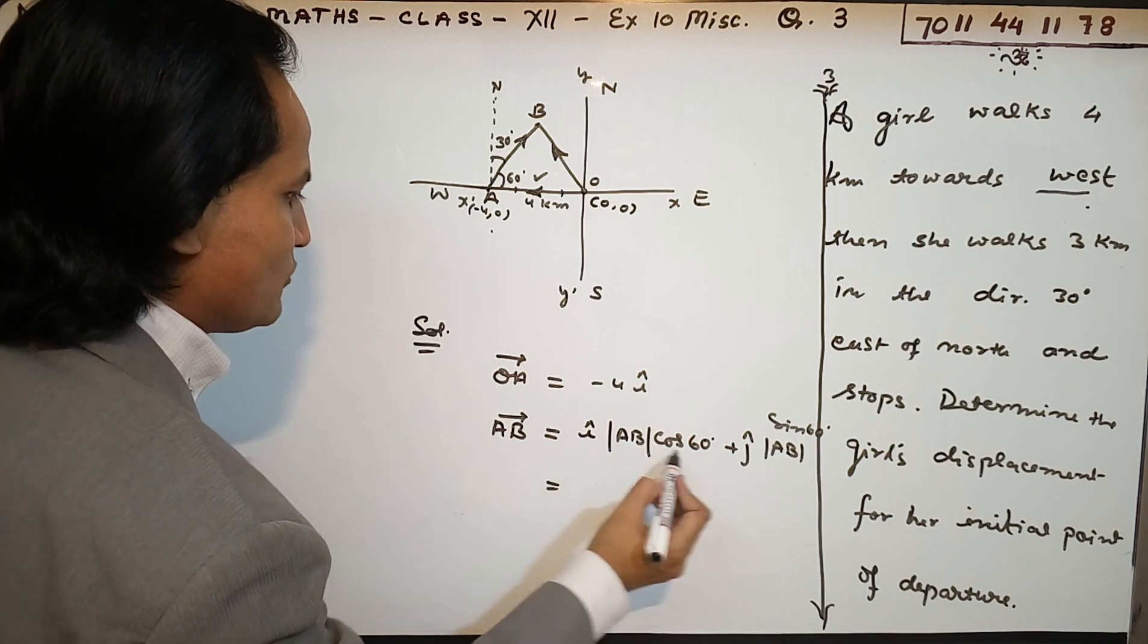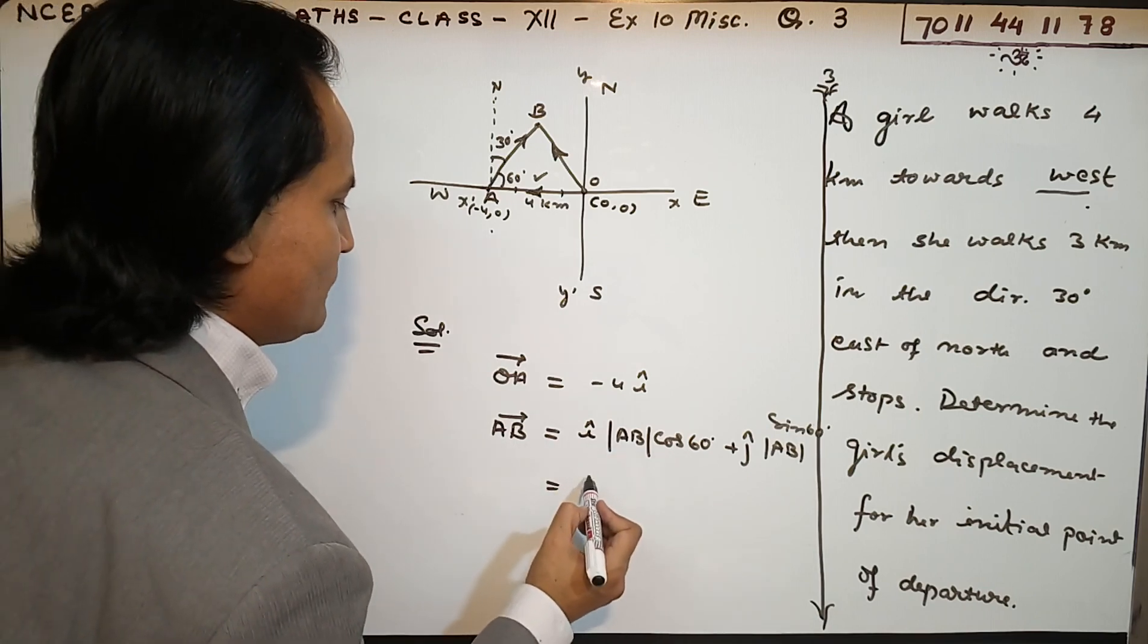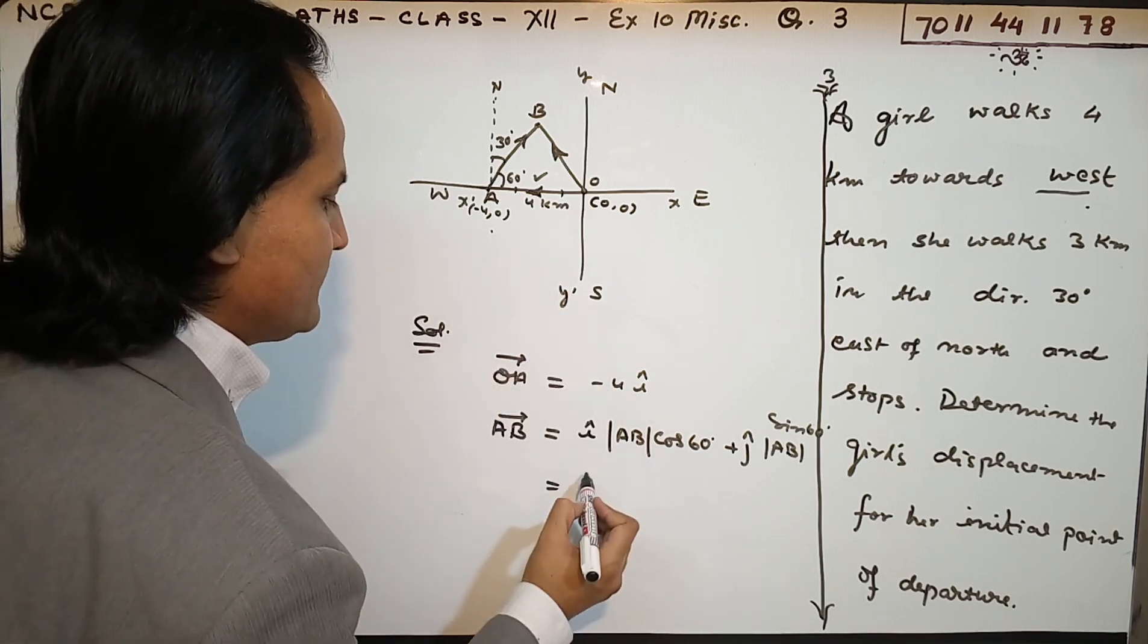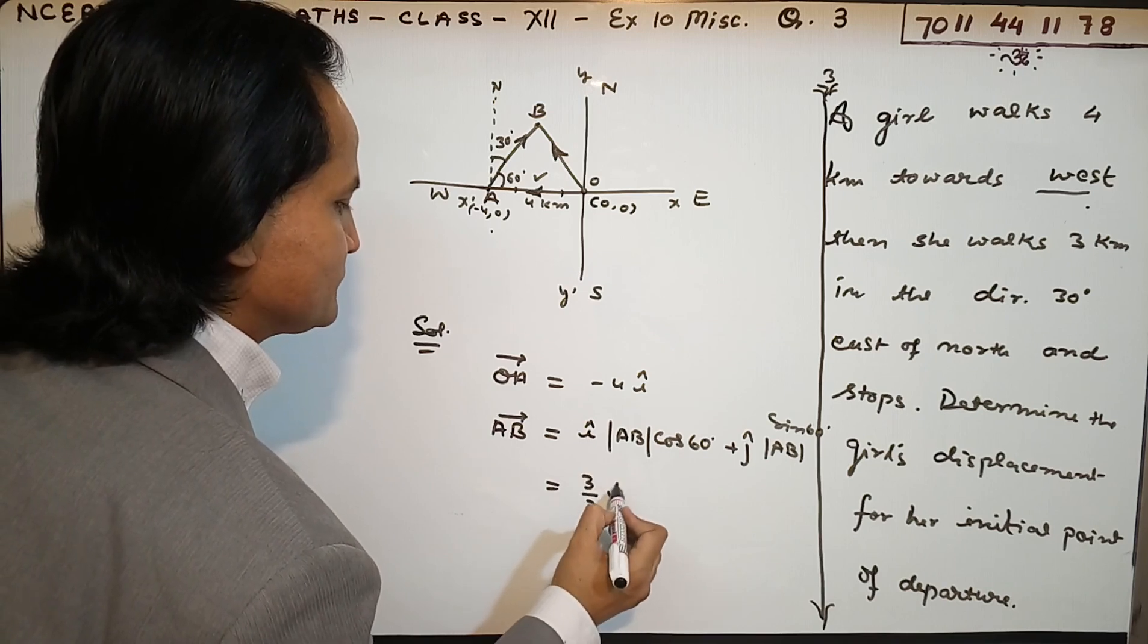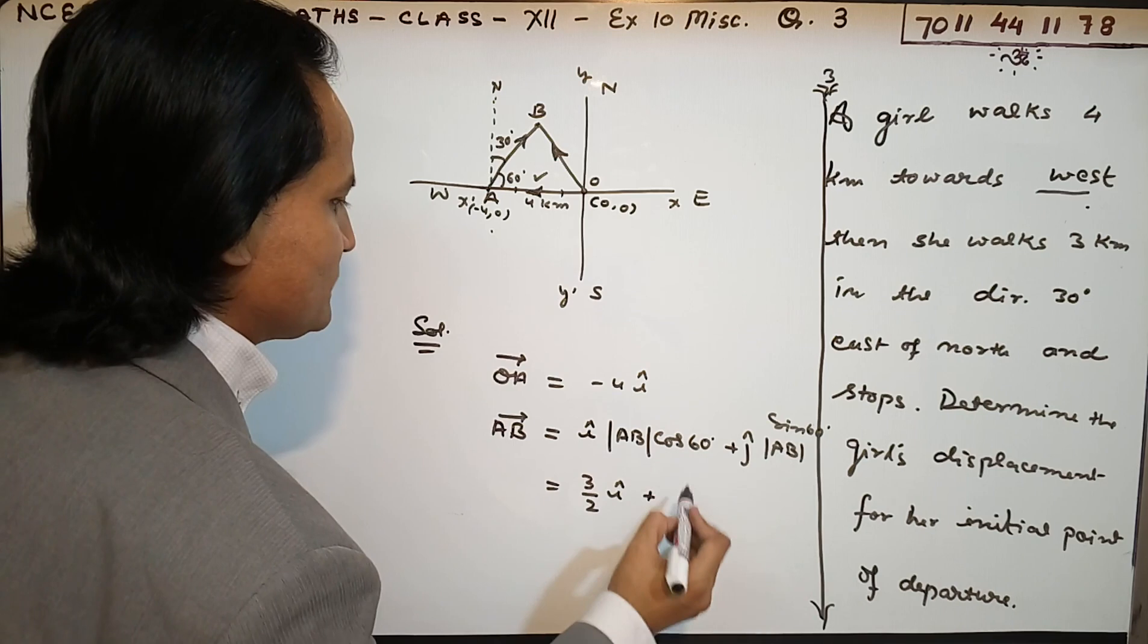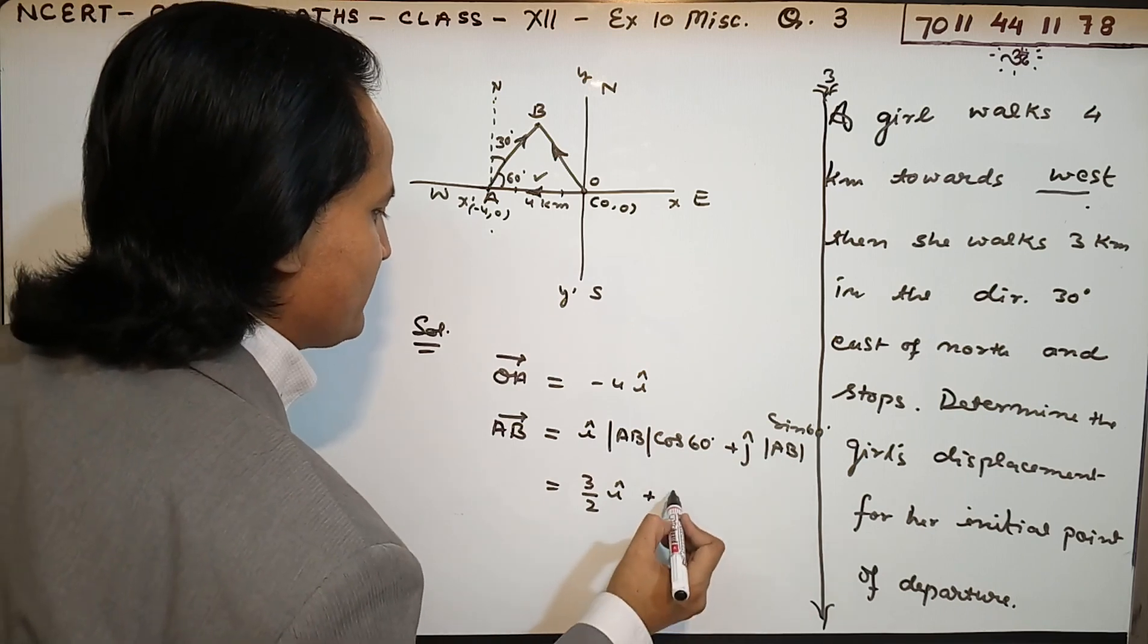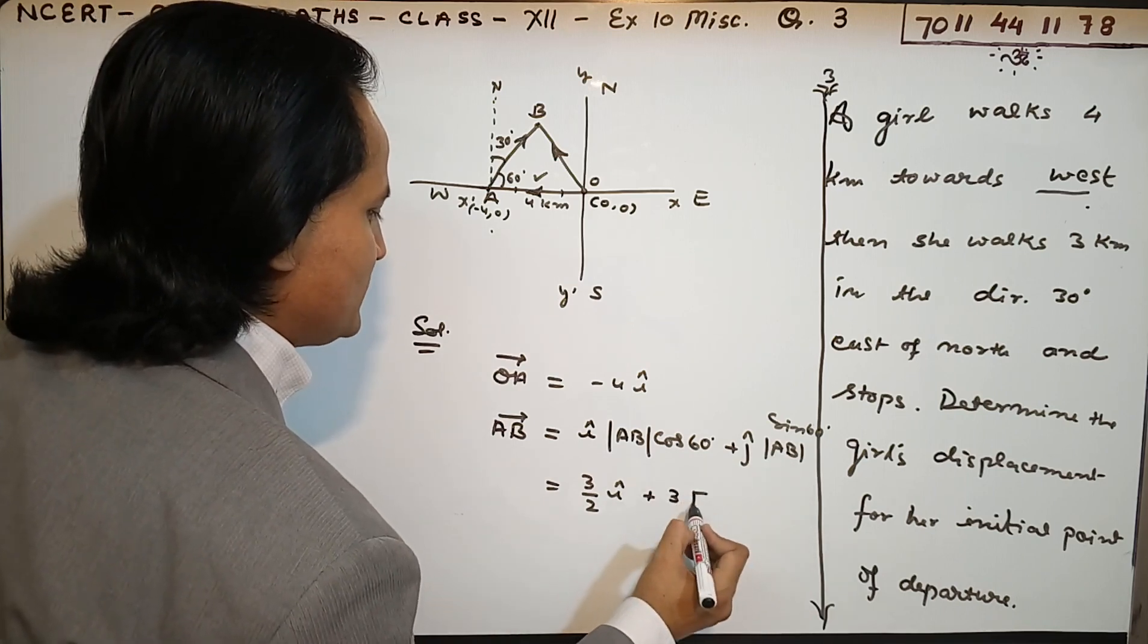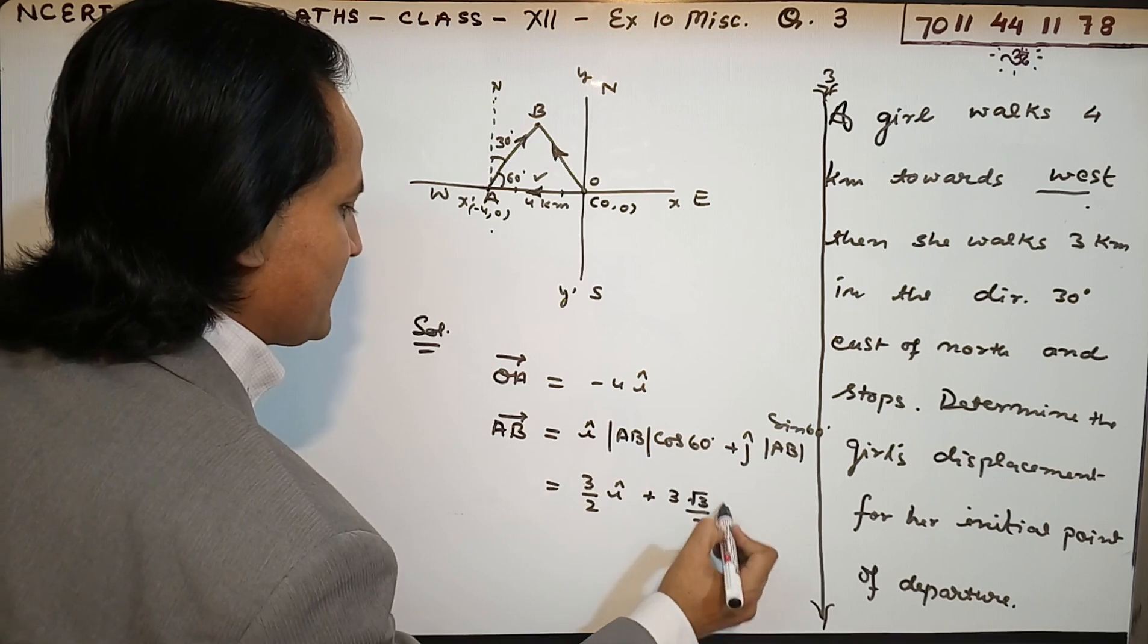So you have cos 60 - what's the value of cos 60? 1/2. And AB is 3, so you get 3/2 i. And sin 60? sin 60 is root 3 over 2, and AB is 3. So 3 times root 3 over 2, and j here.